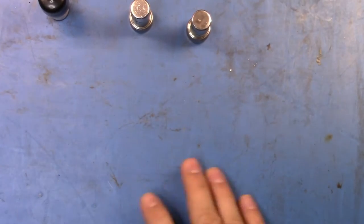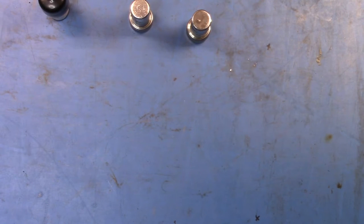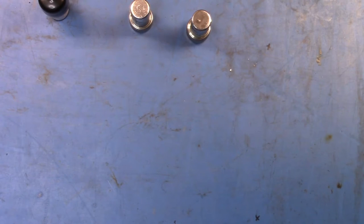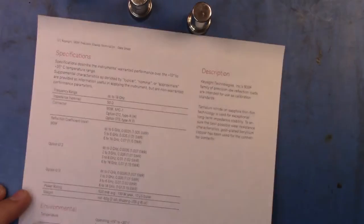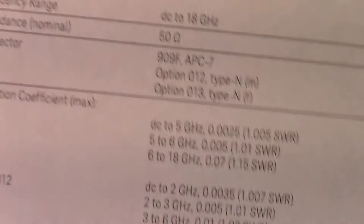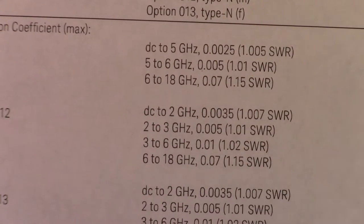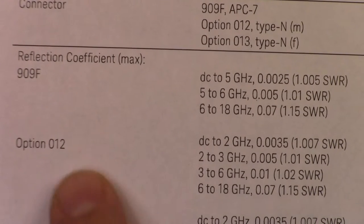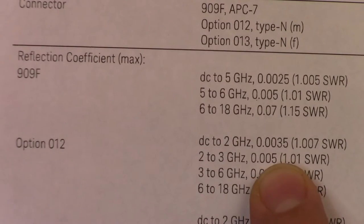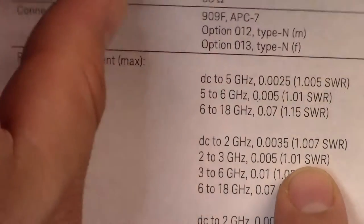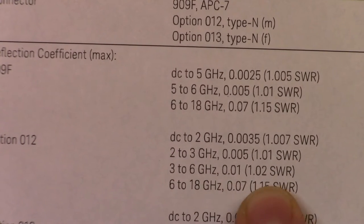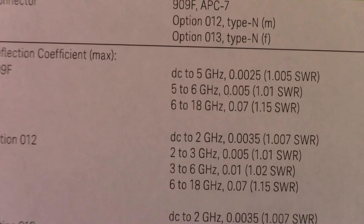In a 50 ohm world, if you had a perfectly matched 50 ohm load, then you would have a standing wave ratio of one-to-one. There'd be basically no reflected wave. If we go and have a look at the specifications for the 909F that I have, option 12, from DC to 2 gigahertz I should have a standing wave ratio of 1.007, up to 3 gigs 1.01, and up to 6 gigs 1.02.